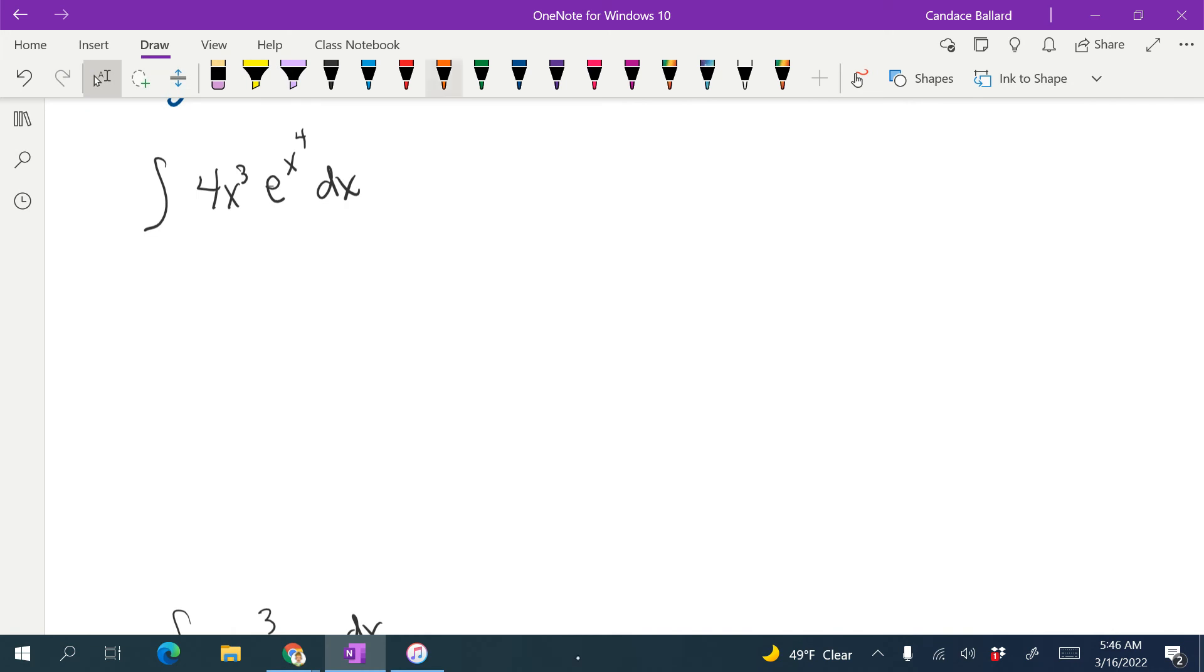I see an inside function right here, so that's going to become my u for u substitution. So u equals x to the 4th, which means that du, its derivative, equals 4x cubed dx.